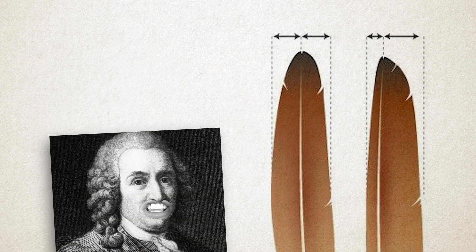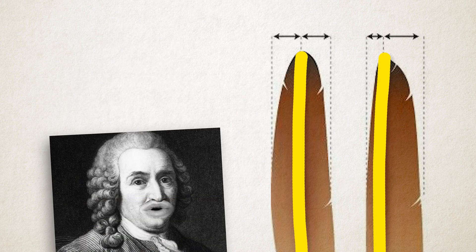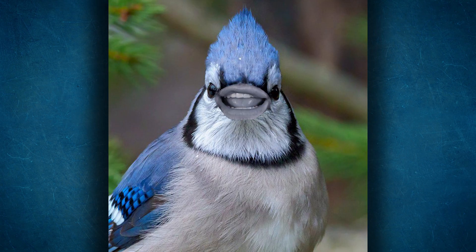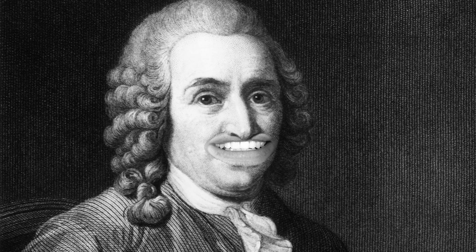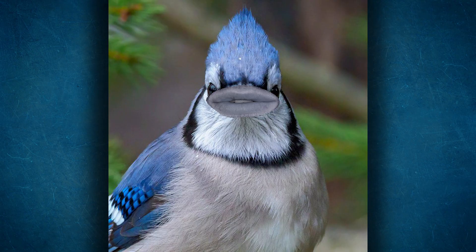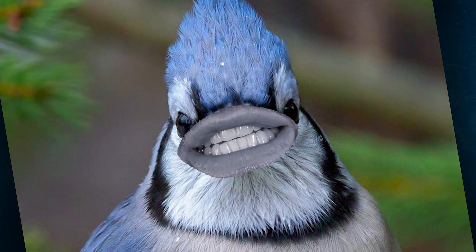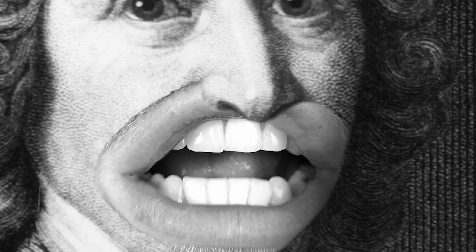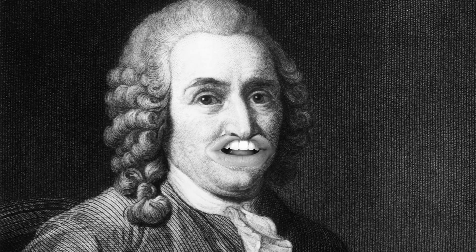You can tell the difference by looking at this part, which is called the rachis. Linnaeus: The rachis. Charlie: Rachis. Yeah, it's a pretty fun one, right? Try it out. All three: Rachis. Rachis. Rachis. Charlie: All right, very good.